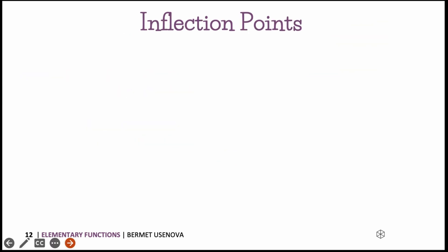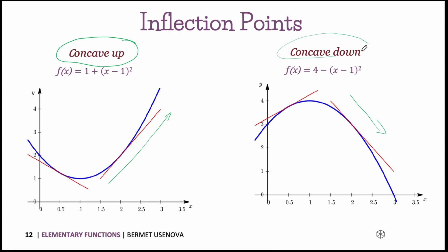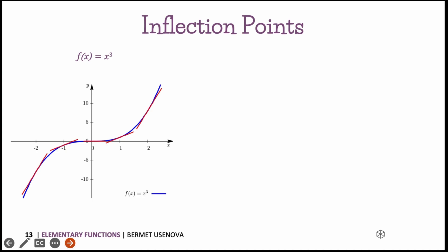Next we talk about inflection points. First, I want to show examples of concave up and concave down functions. A function is concave up if its slope increases as x increases, and concave down if its slope decreases as x increases — meaning the slope of the tangent line decreases with increasing x. Inflection points are points where the graph changes between being concave up and concave down, or vice versa. The simplest example is x to the power of 3, where the inflection point is the origin at x equals 0, y equals 0 — the exact point where the function changes from concave down to concave up.